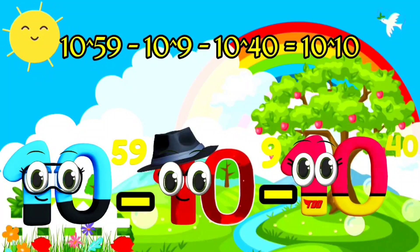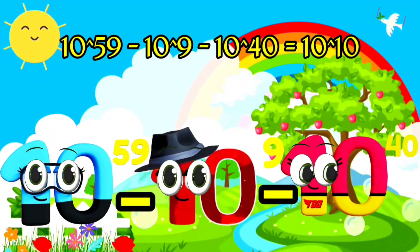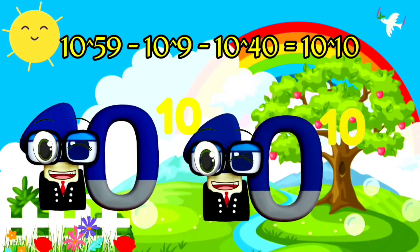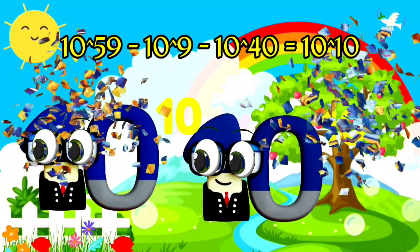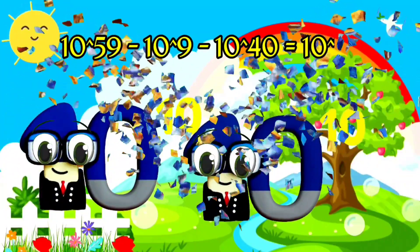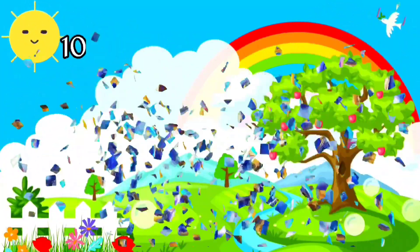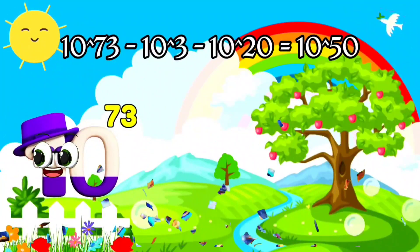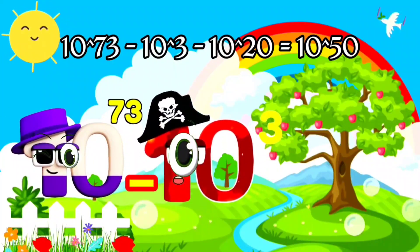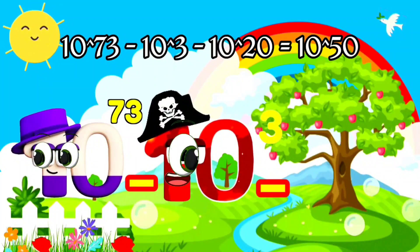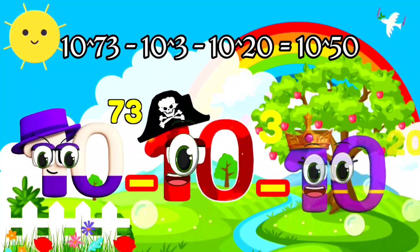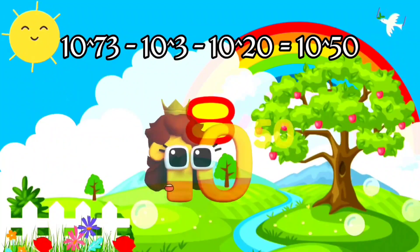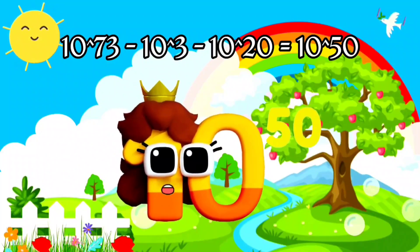10 Duodecillion. Equals. I'm 10 Billion, with 10 zeros. I'm Quatuorvigintillion, and I have 70 zeros. I'm 1,000, and I've got three zeros. 100 Quintillion. Equals. 100 Quintillion.